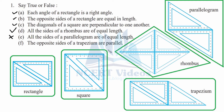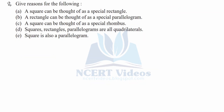Part F - the opposite sides of a trapezium are parallel. This is your trapezium, made up of three 30-60-90 set squares. Only one pair of opposite sides is parallel; the other pair is not parallel. Therefore this statement is false. That completes question one.